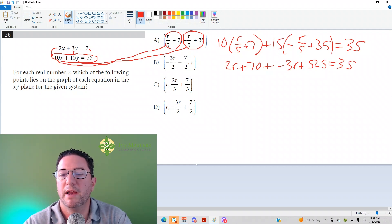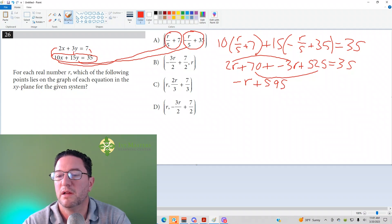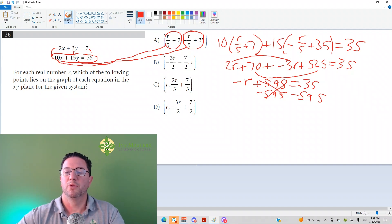And we get 525 equals 35. And so now, combining like terms, I combine those two, I get negative R. I combine these two, I get plus 595 equals 35. And then when I subtract my 595 from both sides, what I get, and you don't actually have to do this, but what you end up getting is an actual value for R.